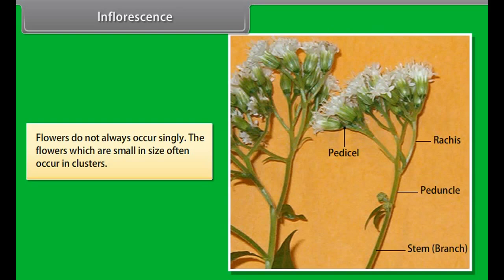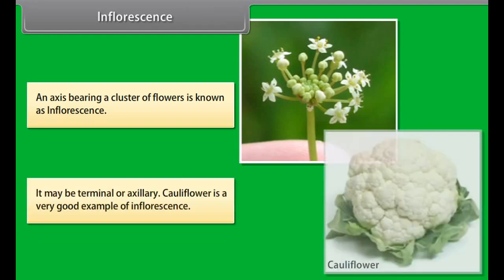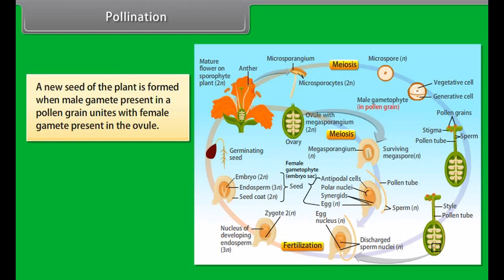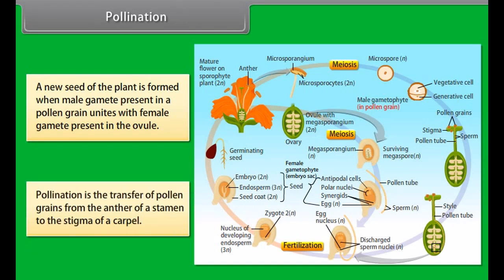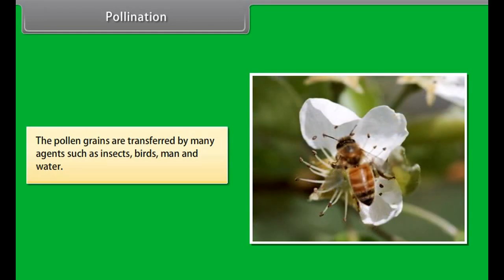Neuter flowers are those in which flowers lack both stamen and pistil. Examples include mango and cashew. Plants that bear both types of unisexual flowers are called monoecious plants — examples include maize, cucurbit, and castor. Plants that bear only one type of unisexual flower are called dioecious plants — examples include date palm and mulberry.